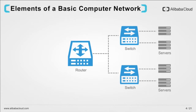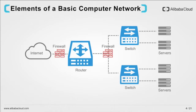Going further, we have our servers connected to the switches, primarily used to host certain services or applications. The internet is usually connected to our basic network via the core router in the network. Of course, there are firewalls in place that can be used to decide what kind of traffic flows between internal network segments and between the internet and your basic network. There are a number of other networking services and devices that can be discussed, but that's beyond the scope of this webinar. This knowledge would suffice for what we want to describe within the cloud networking world.